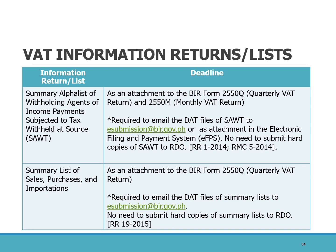We are also required to provide the BIR with informational returns or lists. This includes the Summary Alphabetical List of Withholding Agents, or SLAT, filed together with BIR Form 2550-Q and 2550-M, now submitted via email. We are also required to file the Summary List of Sales (SLS), Summary List of Purchases (SLP), and Summary List of Importations (SLI). These summarize all sales, purchases, and importations — whether VATable, VAT-exempt, or zero-rated — and are filed together with BIR Form 2550-Q and submitted via e-submission to the BIR.